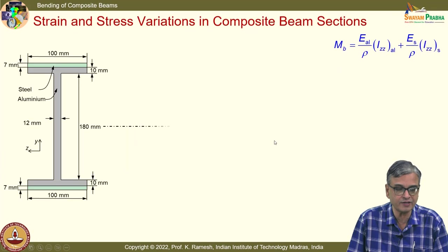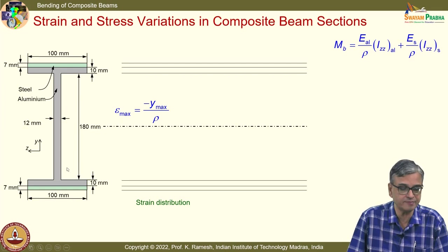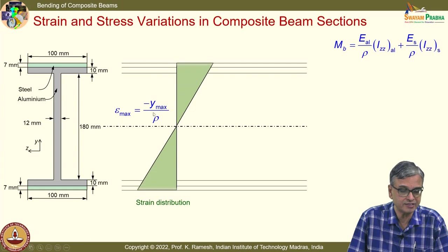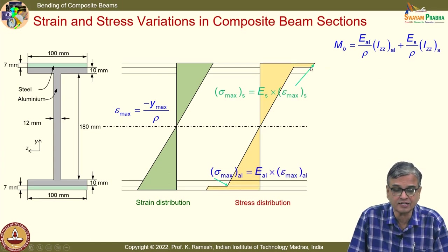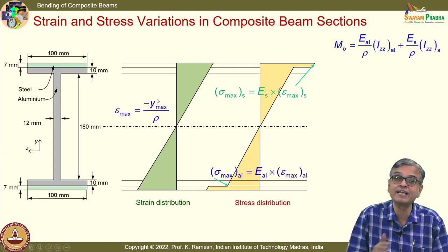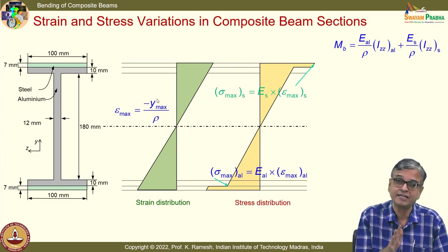When we plot the strain variation for a composite beam, the strain variation is linear. However, when you plot the stress variation, it will have a step at the interface. Because we are looking at bending, even though the thicknesses are small, there would be a linear variation due to the factor y in both strain and stress expressions — it is not going to be constant. In the case of a hoop it is constant; in bending it varies linearly even though the thickness is small.